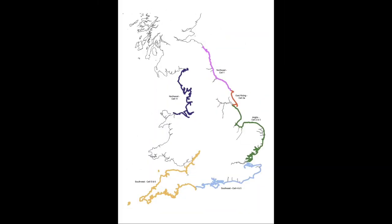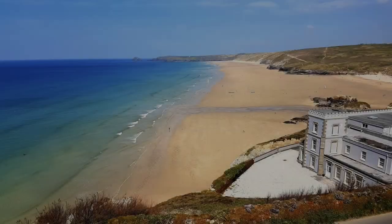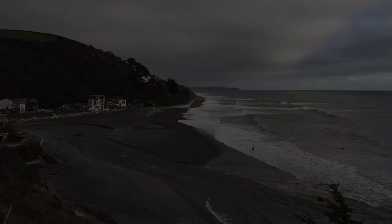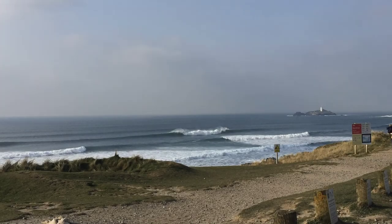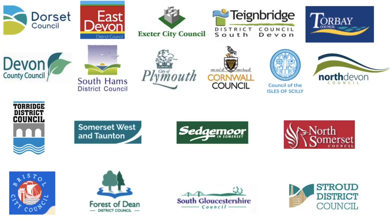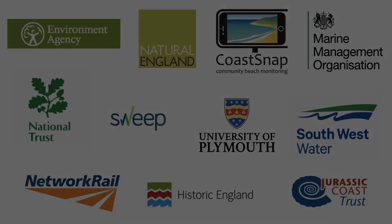We are part of a national network of six coastal monitoring programmes around the UK. The programme covers over 2,000 kilometres of coastline and monitors 133 beaches across Devon, Dorset and Cornwall. The programme is in partnership with 19 local authorities and various organisations such as the Environment Agency.